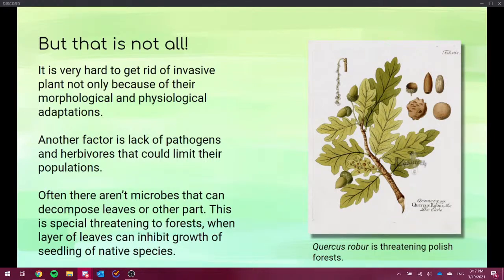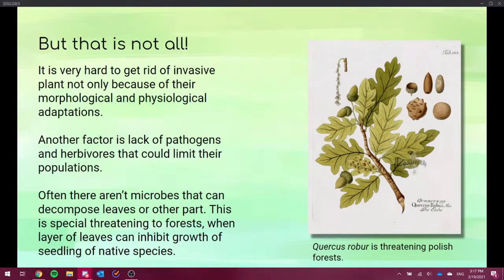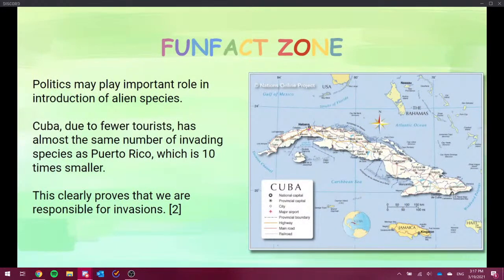Yes, layers of leaves can inhibit growth of seedlings of native species. So we are slowly coming to the end of my presentation and that means that we are entering the fun fact zone. So this is actually pretty new research. I believe it is this year that in Cuba, due to fewer tourists, the number of invasive species are much less than expected. It is about as much as Puerto Rico, which is ten times smaller, when the scientists thought that the bigger the country, the more the invasive species. Because usually there would be more people there and they would just bring more seeds. So this clearly proves that we are responsible for invasions.